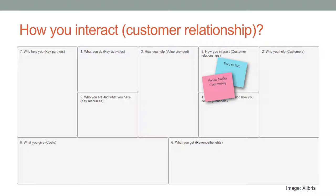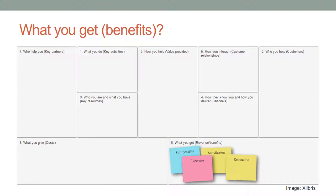The Benefits segment requires information mainly about soft benefits, since libraries are non-profit organizations. This might include satisfaction, enjoyment, flexible hours, quality, fully used services, heavily used collection, more time for other services, professional development, reputation, and recognition. Some of the soft benefits, such as professional satisfaction, professional development, reputation, and recognition, are also the benefits gained from ExLibris.